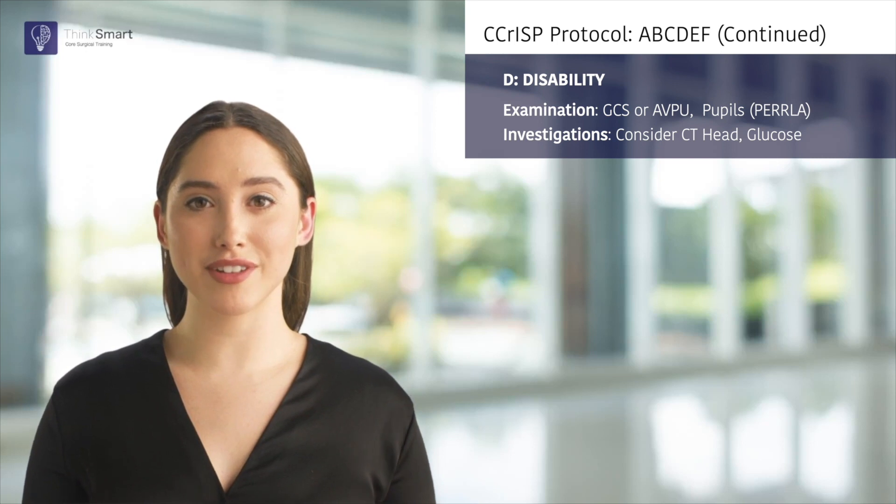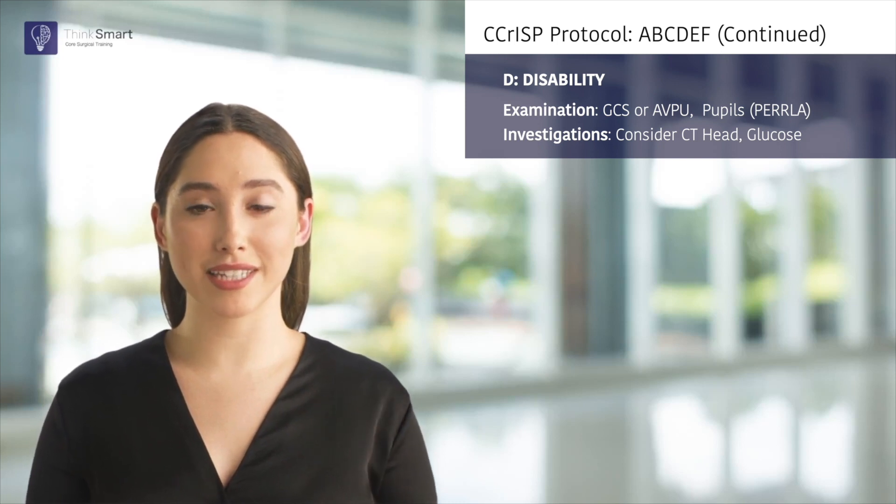Once the circulation is stable I would move on to disability by first assessing the patient's conscious level using the GCS scale and would request a CT head if this is less than 13. I would also ensure that the pupils are equal, bilaterally round and responsive to light and accommodation, specifically looking to exclude pinpoint pupils which would indicate opioid toxicity. I would also want to measure the patient's glucose level to ensure they are not hypoglycemic.